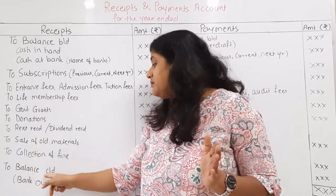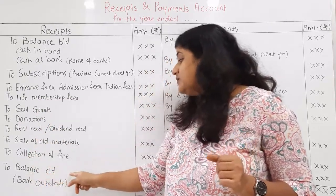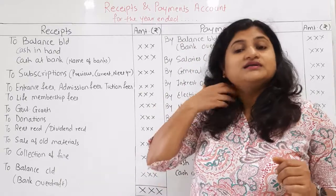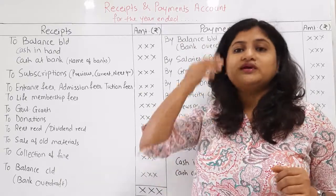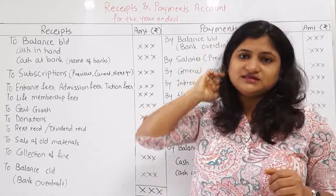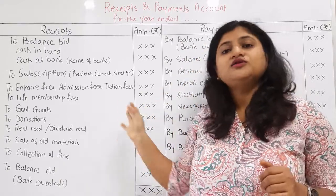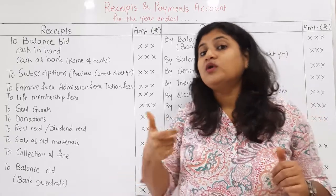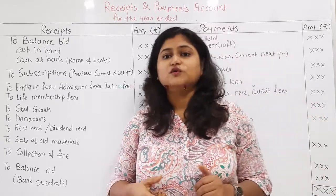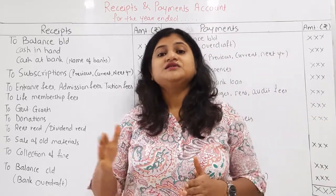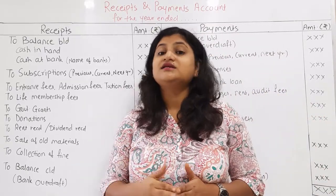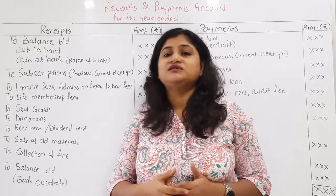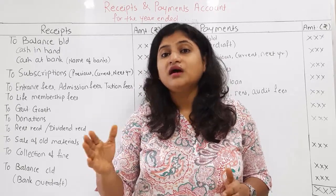Next: balance carried down — bank overdraft. Bank overdraft means what? Businessmen maintain a current account, and NPOs also maintain a current account.